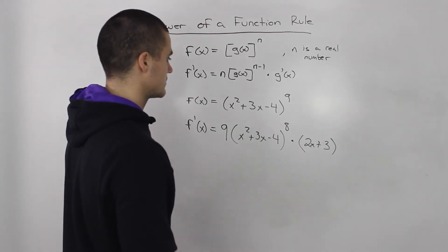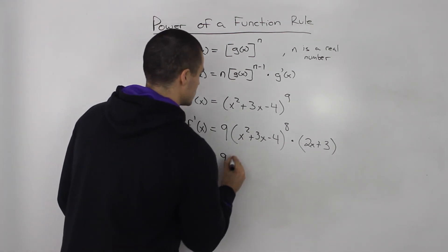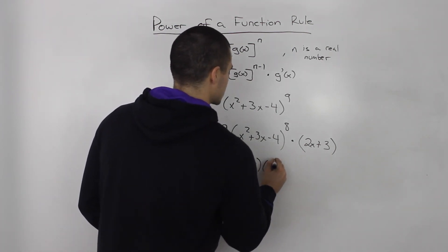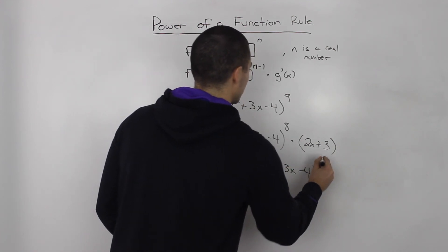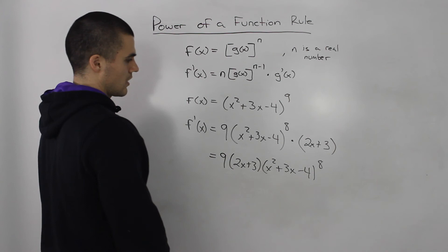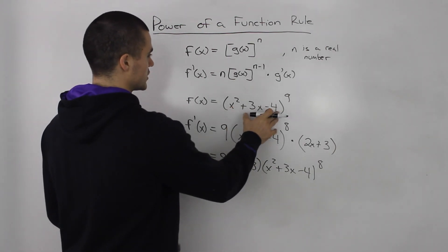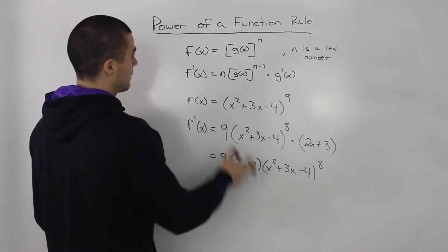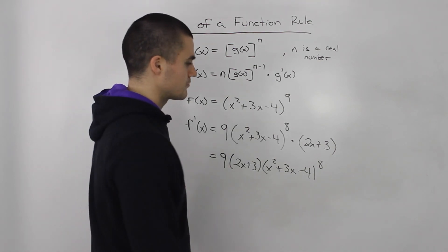And that's it, that's our answer. You could maybe even bring this in front, so we could have 9(2x + 3)(x² + 3x - 4)^8. All right. So it's just a nice quick way to take the derivative of a complex function like this. Instead of expanding it, we just apply the power of a function rule, and we get the derivative pretty quickly.